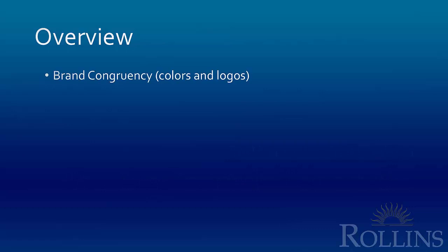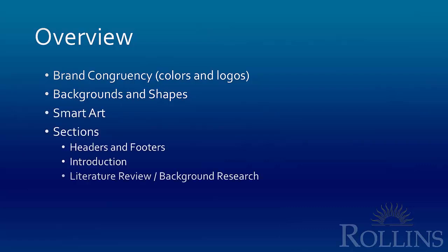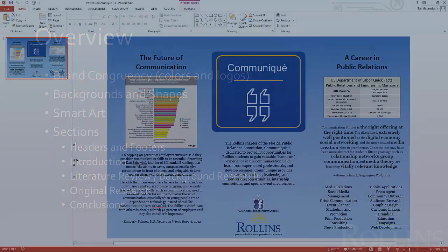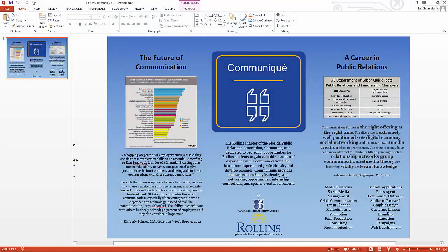We're going to look at brand congruency and the importance of colors and logos. We're going to look at using backgrounds and shapes, smart art, and then what sections you would normally have in a poster — headers and footers, an introduction, literature review or background research, original research, and conclusions. We'll start by looking at some sample posters to think about how to frame your piece.